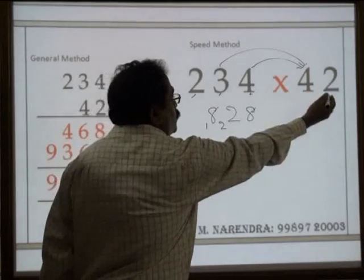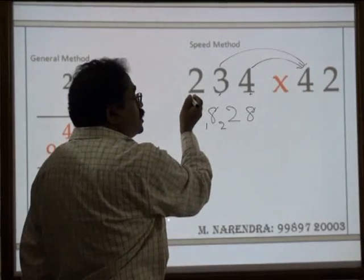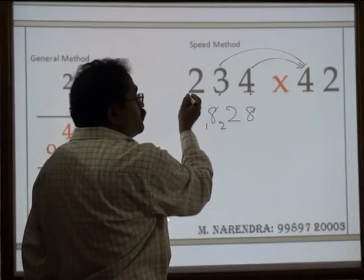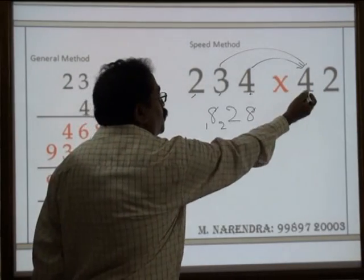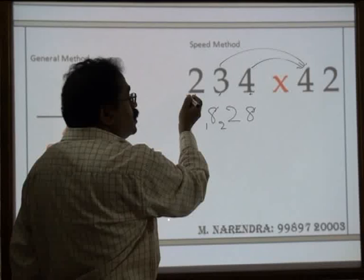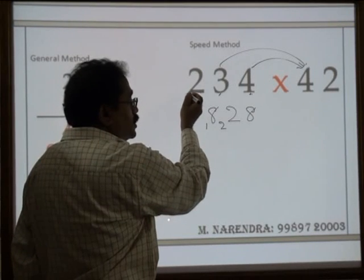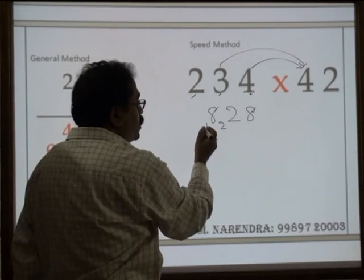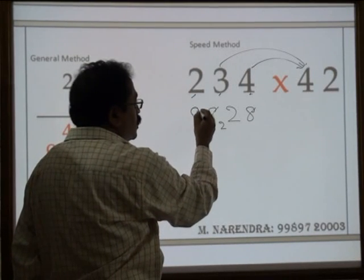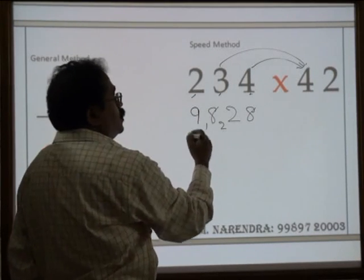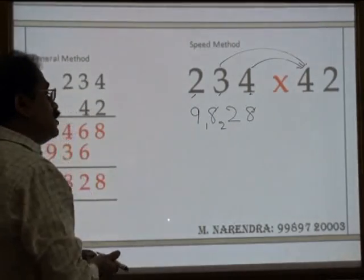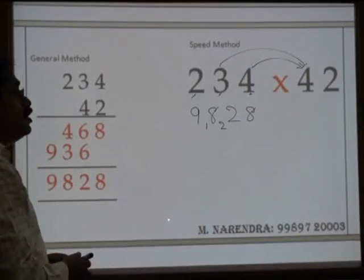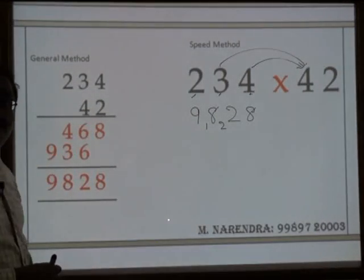With 2, the last number is multiplied. Now with 4, multiply the last number: 4 times 2 is 8. Eight plus carry 1 is 9. Your answer is 9828.